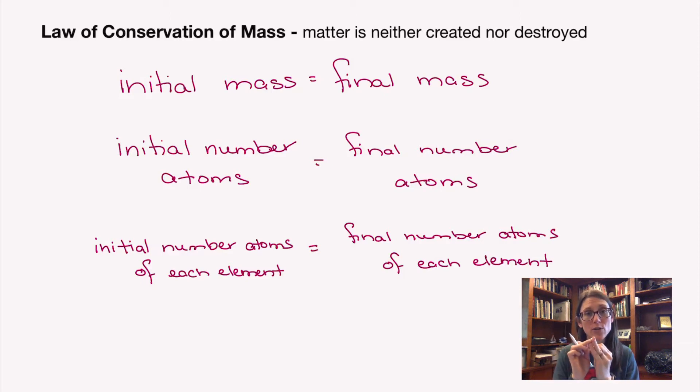You're not creating or destroying your elements. You can change how they're grouped together, so the total number of molecules or particles might change because they can be in bigger groups or smaller groups. But the number of atoms you have will always remain the same throughout a chemical reaction.